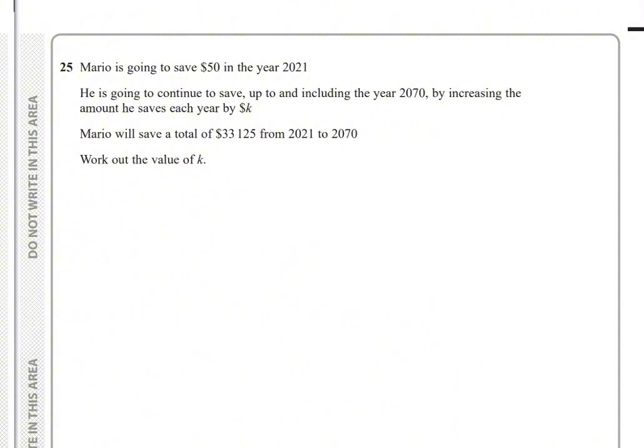We have an arithmetic sequence. The first term is 50, so a equals 50, and it increases each year by k, so d equals k. From 2021 to 2070, we have 50 terms, so n equals 50, because 2021 is included.